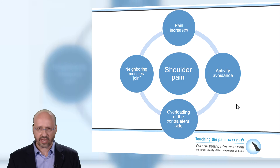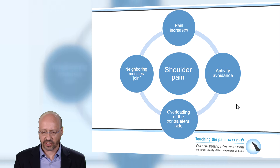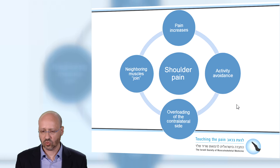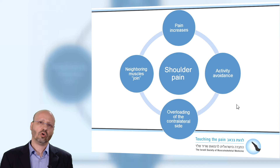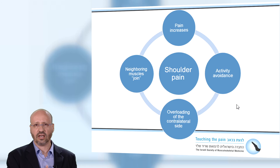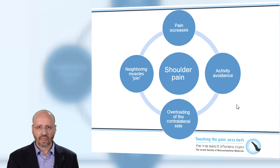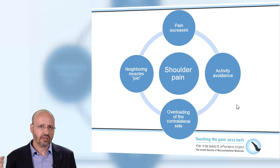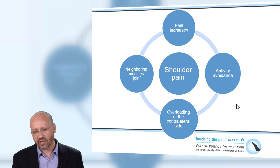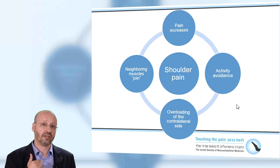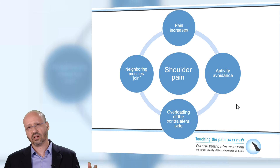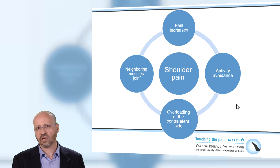So let's go back to the guy we began with. He has a shoulder pain. The pain increases while being active, causing him to avoid activity. Avoiding activity on one hand gives rise to overloading the other hand, so those muscles are working harder. Some neighboring muscles join this tension, giving rise to more pain, more shoulder pain, more activity avoidance, more overloading the contralateral side and the spine. Then neighboring muscles join and it becomes a syndrome — we began with one muscle and now many muscles are involved.